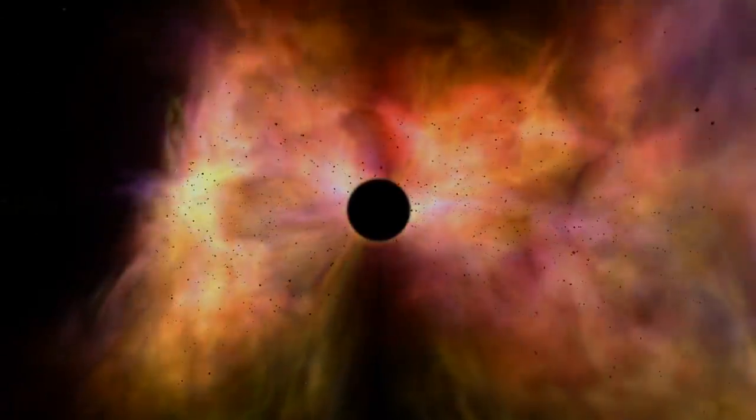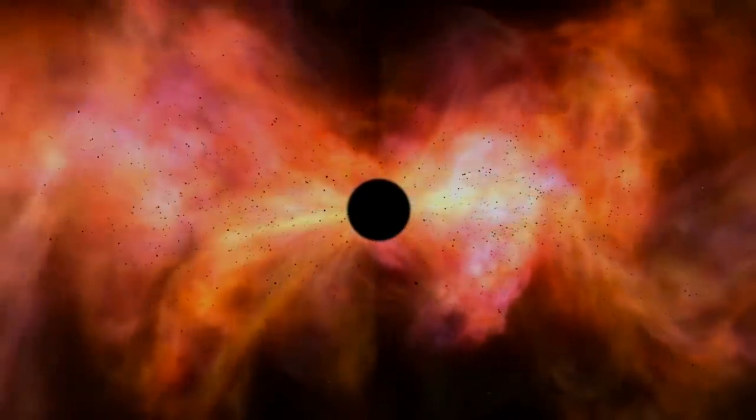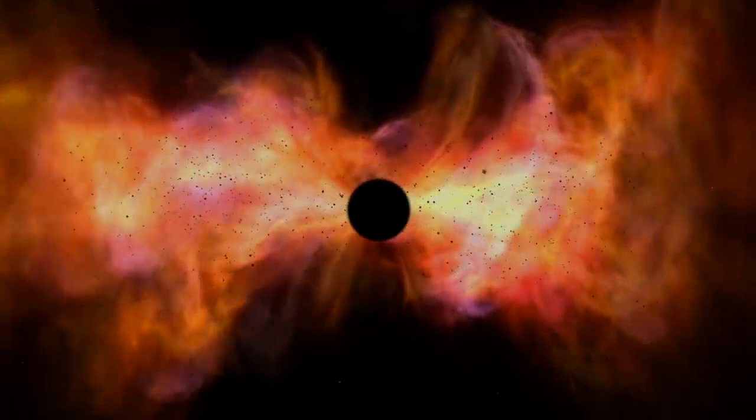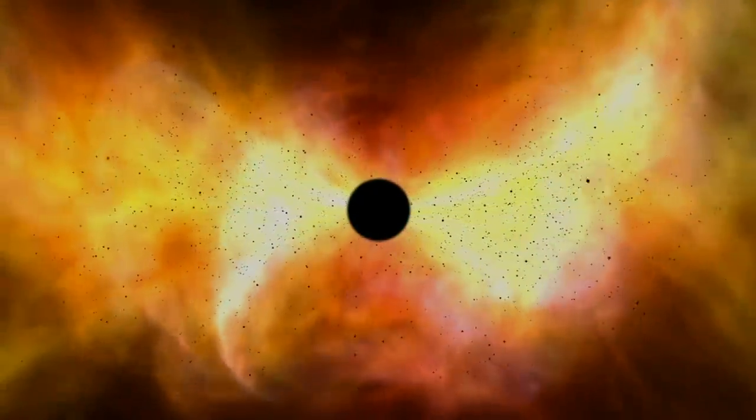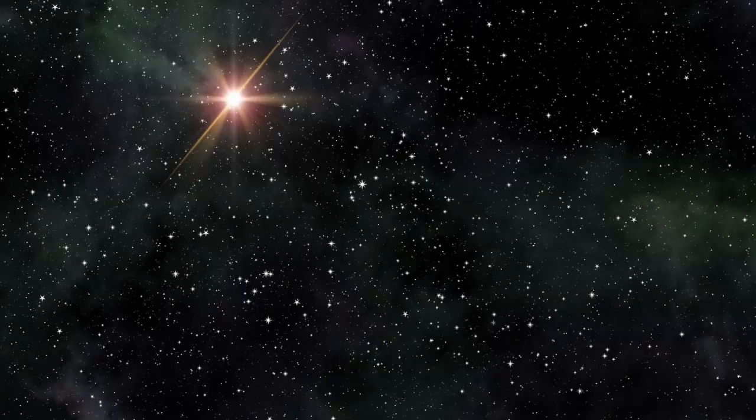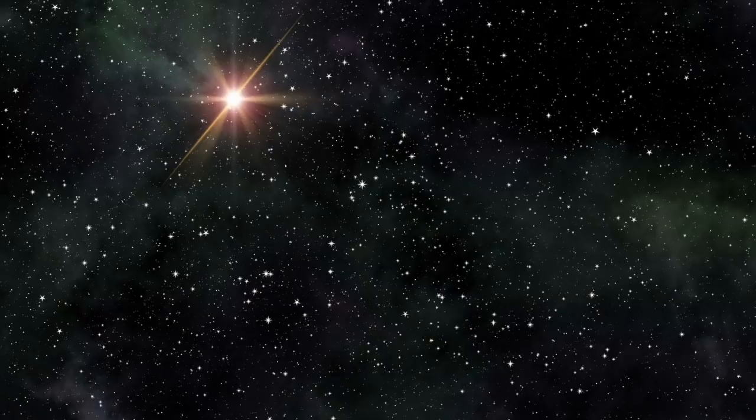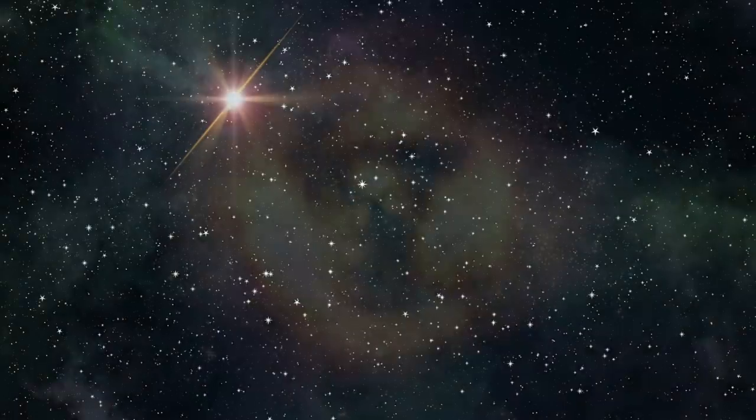If gravity began to pull the universe together like the theory states, galaxies and stars would merge. This would cause great intense heat and energy to become localized, causing stars to explode. Exploded stars create black holes which begin to absorb everything around them. As the universe continued to shrink into itself, more black holes would form. Eventually, everything would be pulled into one massive black hole, returning the universe to a point of singularity.